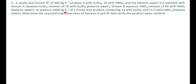Let's decode the question. A waste acid stream is coming at 400 kg/hr and it has two acids: 6 weight percent sulfuric acid and 10 percent nitric acid. Adding together gives 16 percent, so the remaining 84 percent is water.